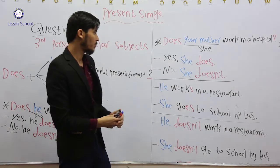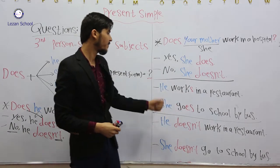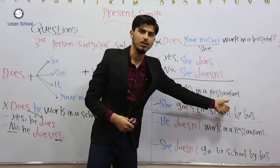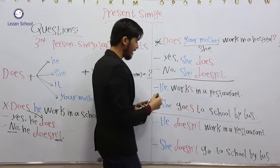Now we can quickly talk about the affirmative, positive and negative forms. He works in a restaurant. Here we add S to the verb.